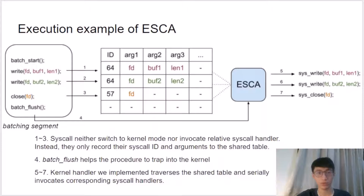Let's give an example of how ISCA works. A normal user-level code segment is enclosed by API BatchStart and BatchFlush provided by ISCA. After entering the batching segment, the behavior of system calls changes. In steps 1 to 3, system calls neither switch to kernel mode nor invoke their handlers; instead, they only record their system call ID and arguments to a shared table. In step 4, after leaving the batching segment, BatchFlush — a user-level system call wrapper — is triggered, trapping into kernel space. In steps 5 to 7, ISCA invokes a flushing handler which traverses the shared table and serially invokes the corresponding system call handlers.